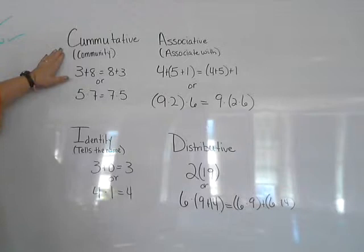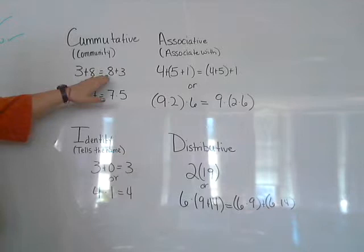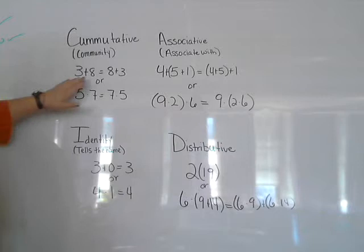The first thing we're going to talk about is the commutative property. If you look at this example here, we have 3 plus 8 is the same as 8 plus 3.